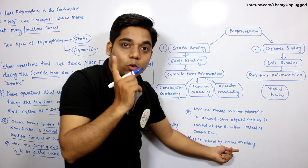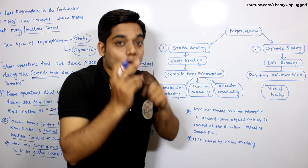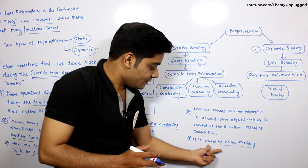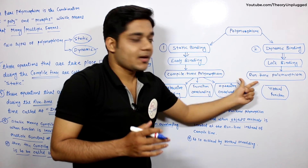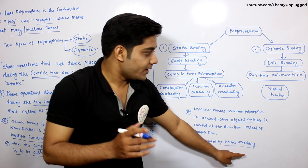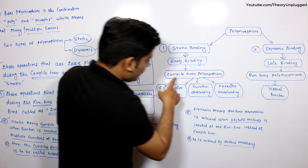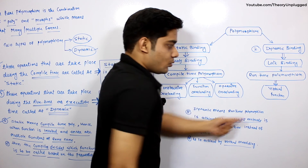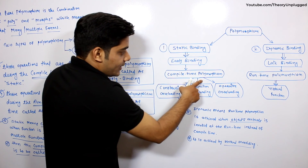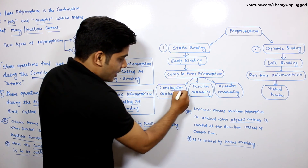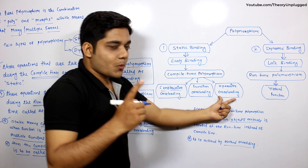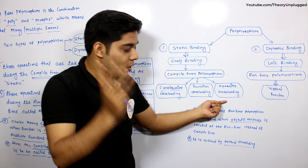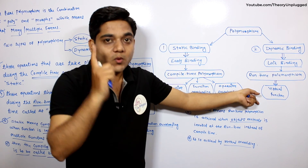Runtime polymorphism is achieved by method overriding, not overloading. For runtime polymorphism, virtual functions are used. For compile time polymorphism, constructor overloading, function overloading, and operator overloading are used.